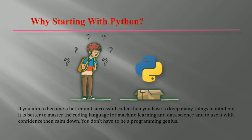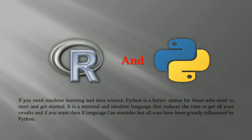If you want to be a master in coding for machine learning and data science, you have to be familiar with one or two languages — first is the R language and next is Python. If you want to be better, you can go with Python, and you don't need to be any genius. There are some basic criteria and basic syntaxes of Python which are quite easy to learn.